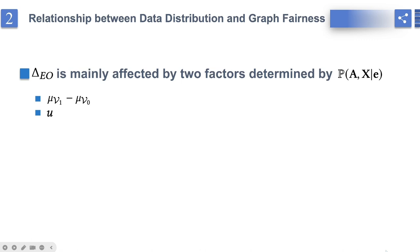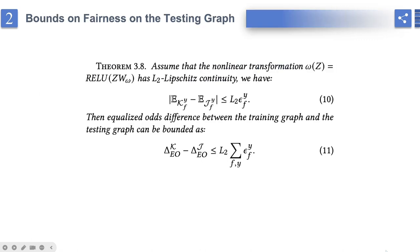One is the feature difference between sensitive groups NuV1-NuV0. The other is the average sensitive balance degree of the graph U. Larger U and NuV1-NuV0 implies a more biased graph, resulting in larger ΔEO. We then characterize the difference of ΔEO between the training graph and the testing graph EOG, showing that ΔEO relies on both ΔEO and EO group representation distance Epsilon, which is determined by how much distribution shifts.